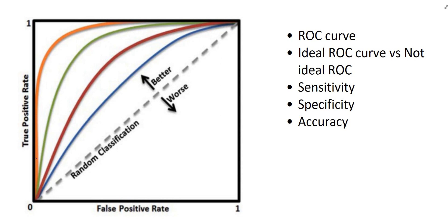Today I'm going to talk about an important curve that might show up on your board exam. It's called ROC — Receiver Operating Characteristic curve. This curve has three key facts you need to know, and usually the question asks you about the general concept.